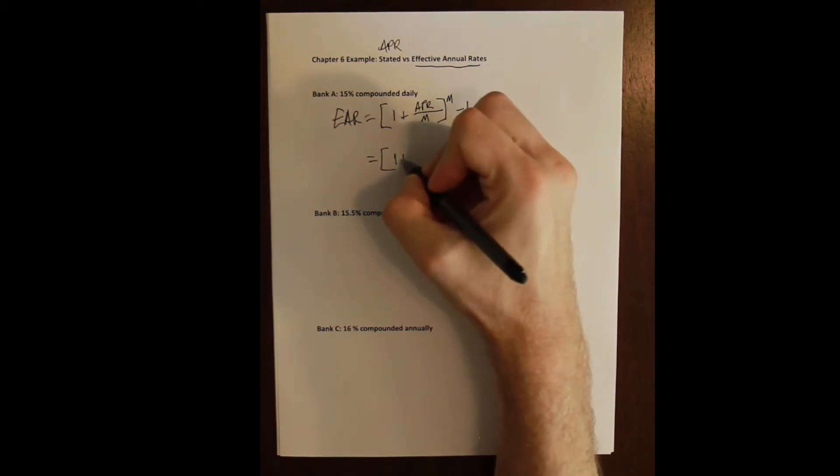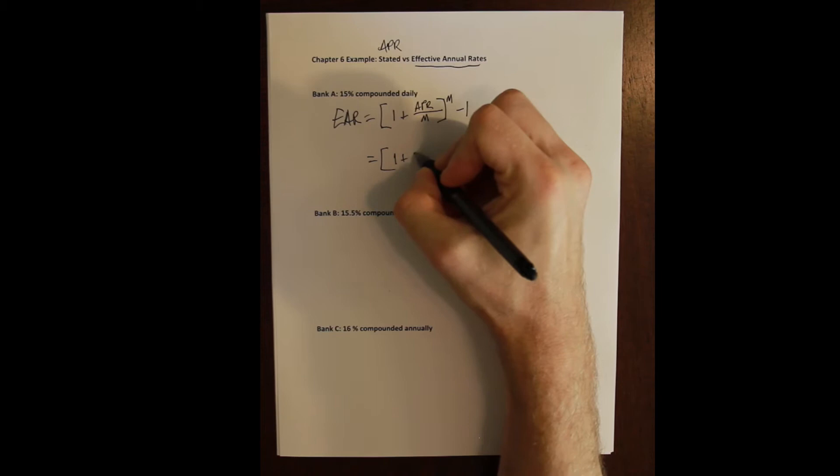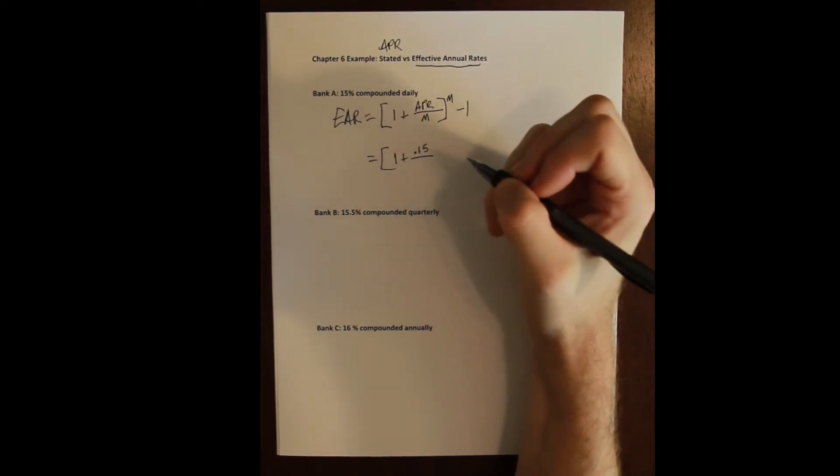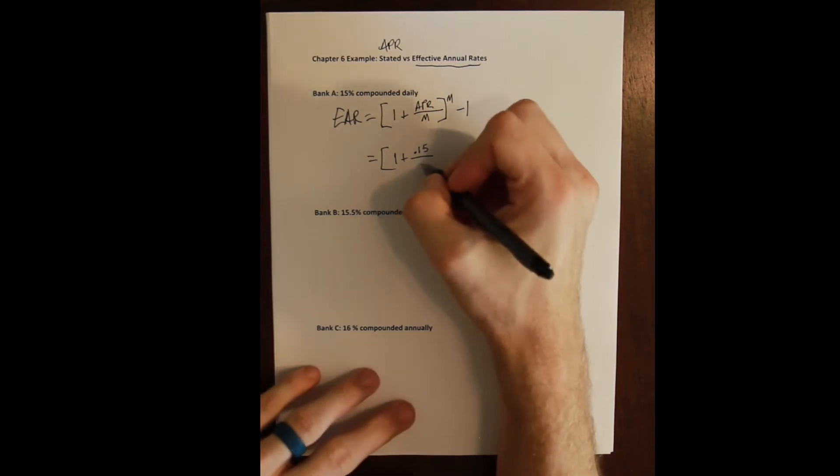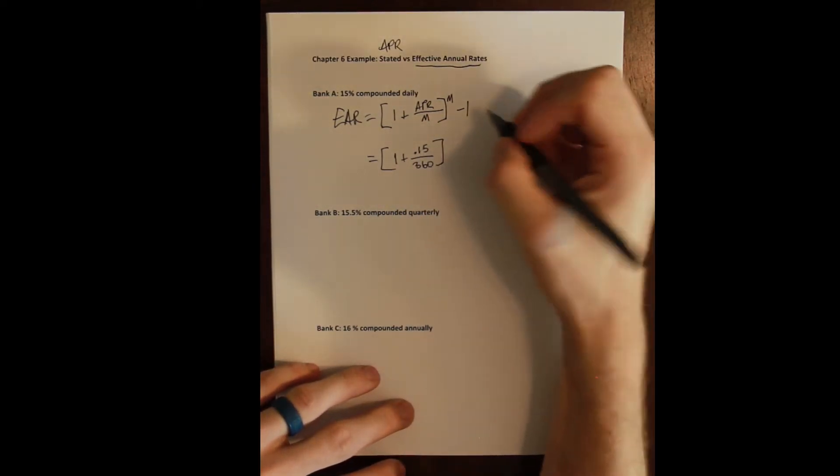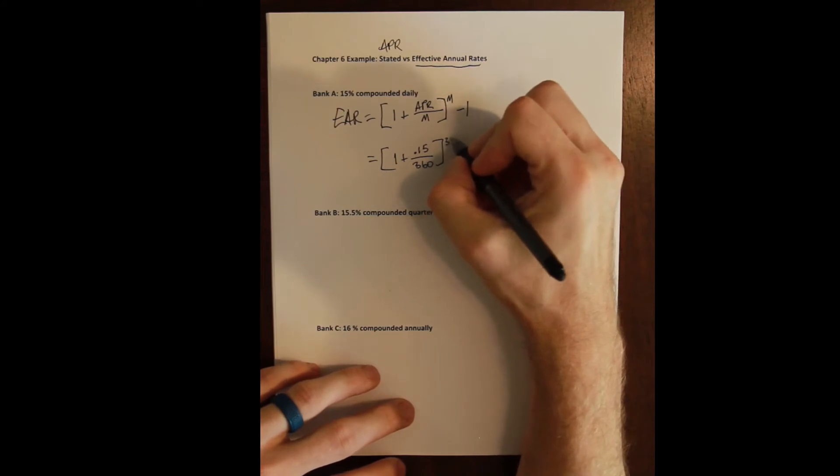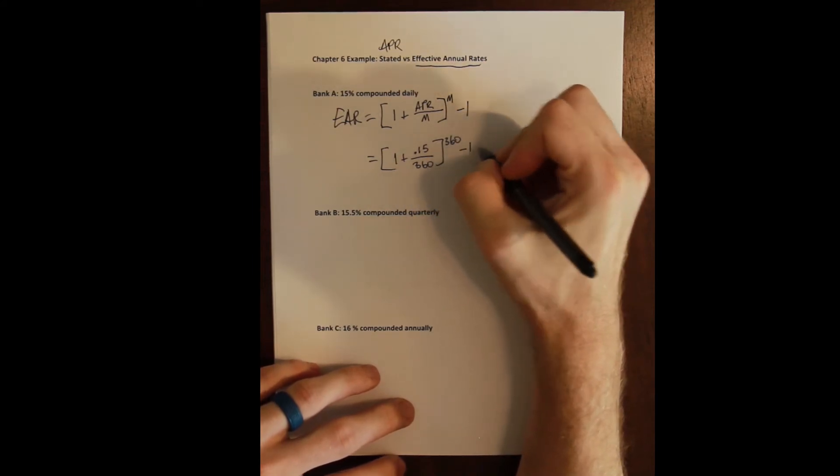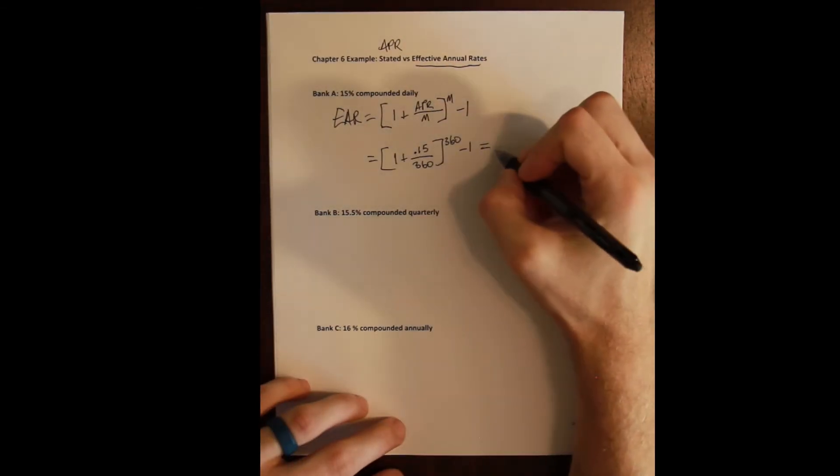We can plug that in. One plus the APR here is 0.15, the number of compounding periods per year is the number of days in a year, and I'll just use 360 to make the math easier, raised to the 360 minus one. You can do that on your calculator, you can even do it on the financial calculator.